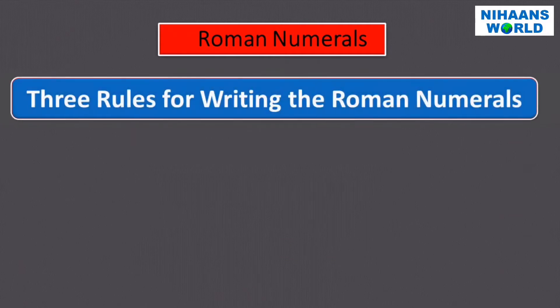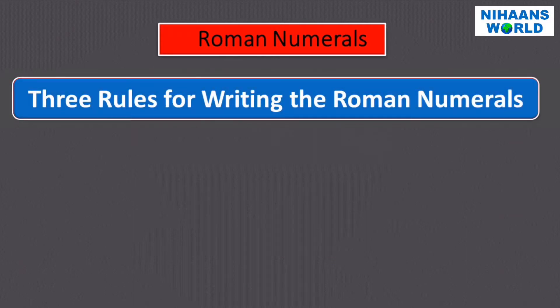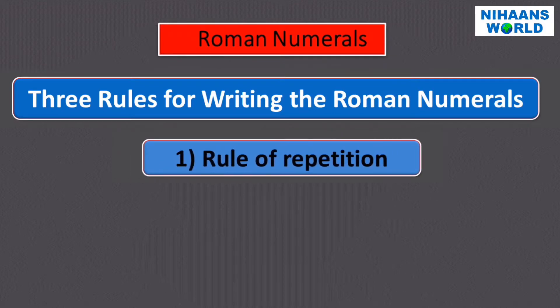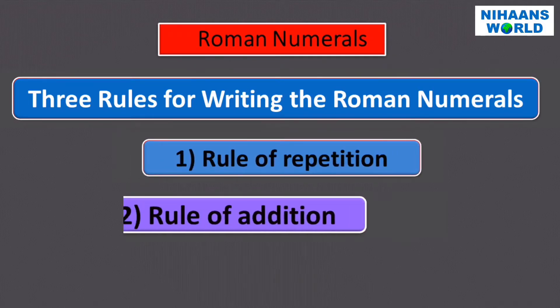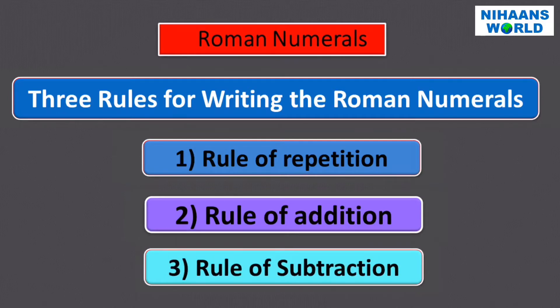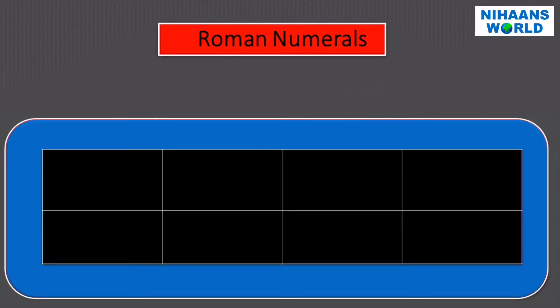We need to remember three rules while writing Roman numerals. Rule one: Rule of Repetition. Rule two: Rule of Addition. Rule three: Rule of Subtraction. Let us learn all the rules one by one. Rule one: Rule of Repetition.